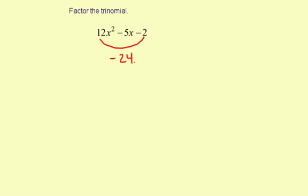And then you need to find the factors of negative 24 that add to make negative 5. By the way, if you have a negative 5 here, that means the bigger factor has to be negative. So you have 1 and negative 24, that doesn't work. 2 and negative 12, that doesn't work. 3 and negative 8, hey, that one works because those add to make negative 5.